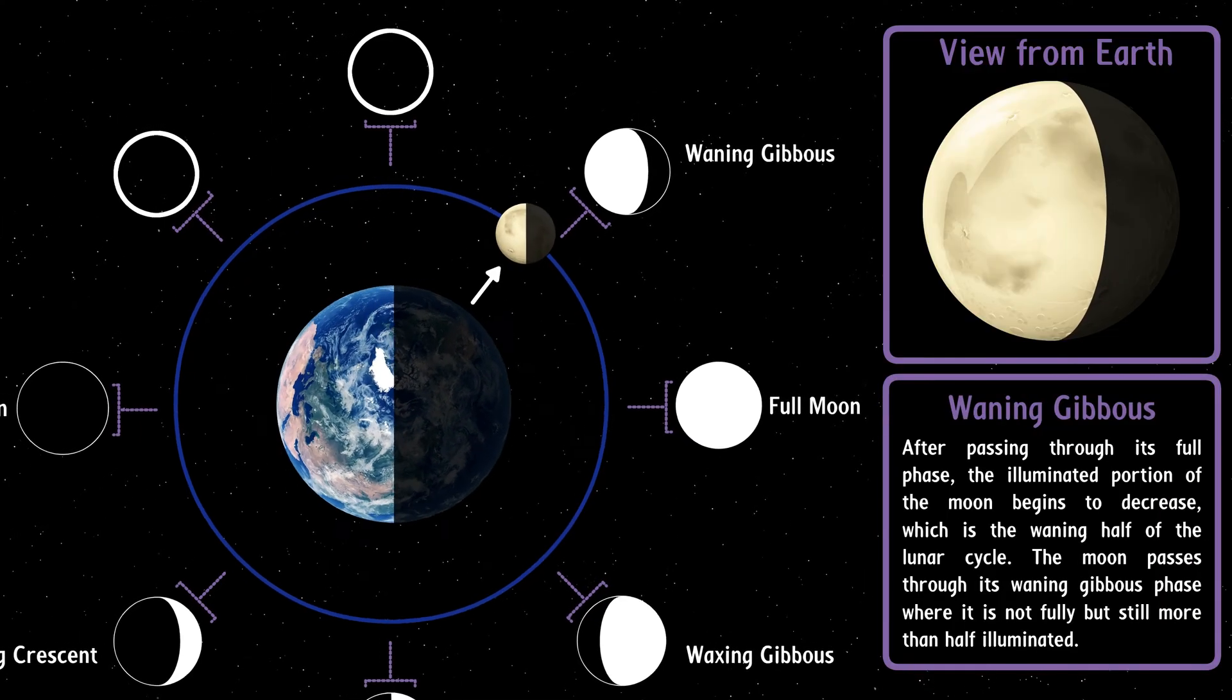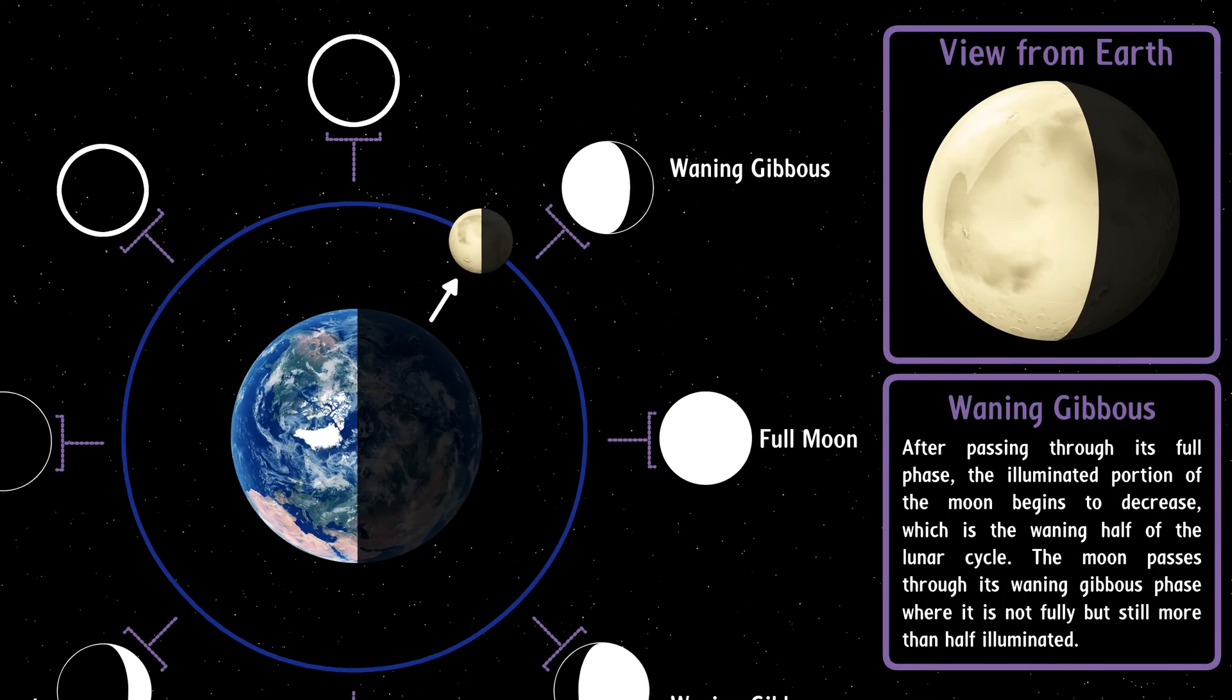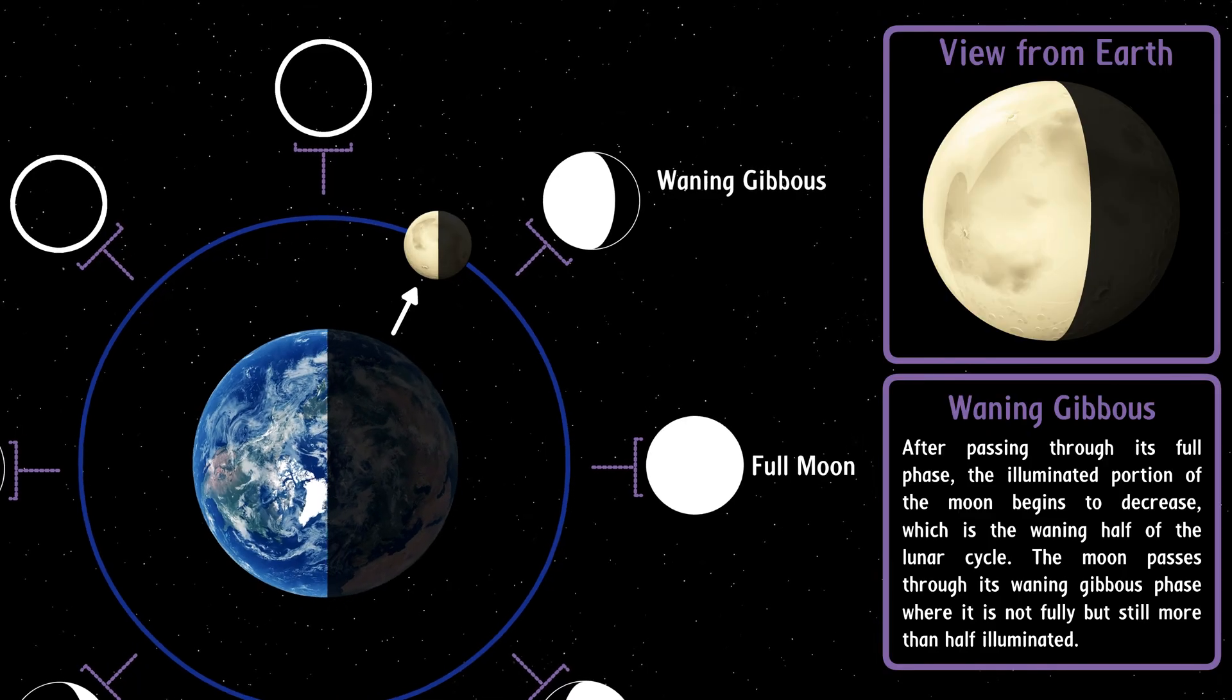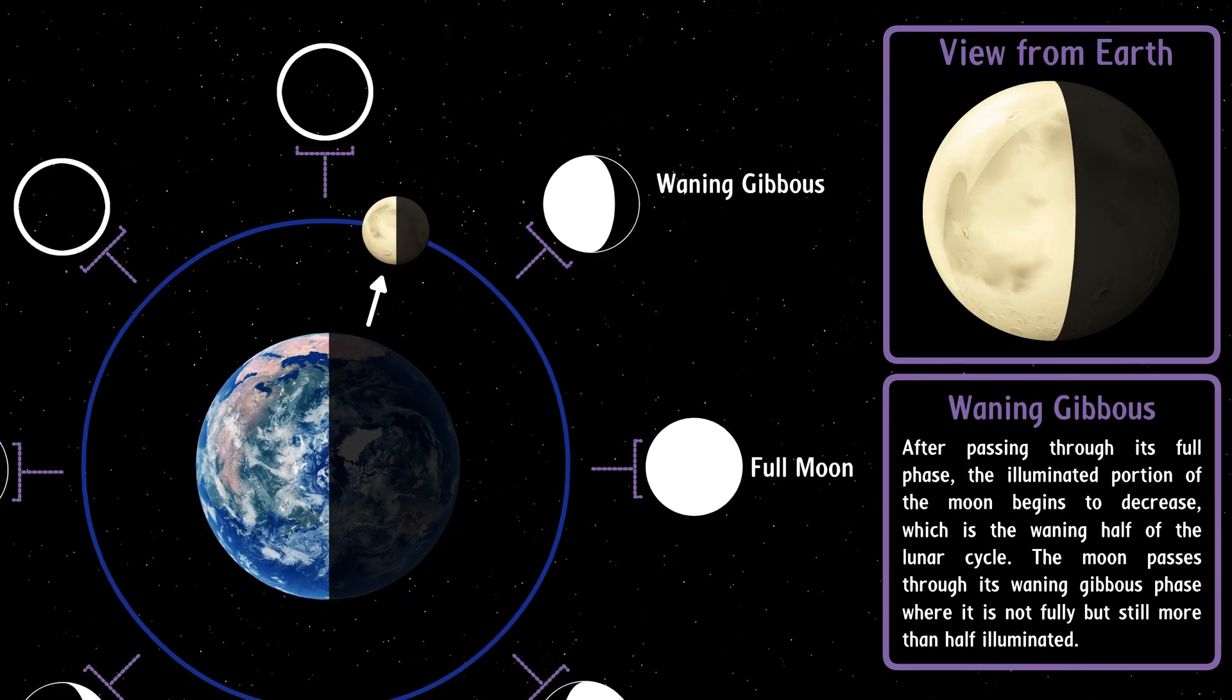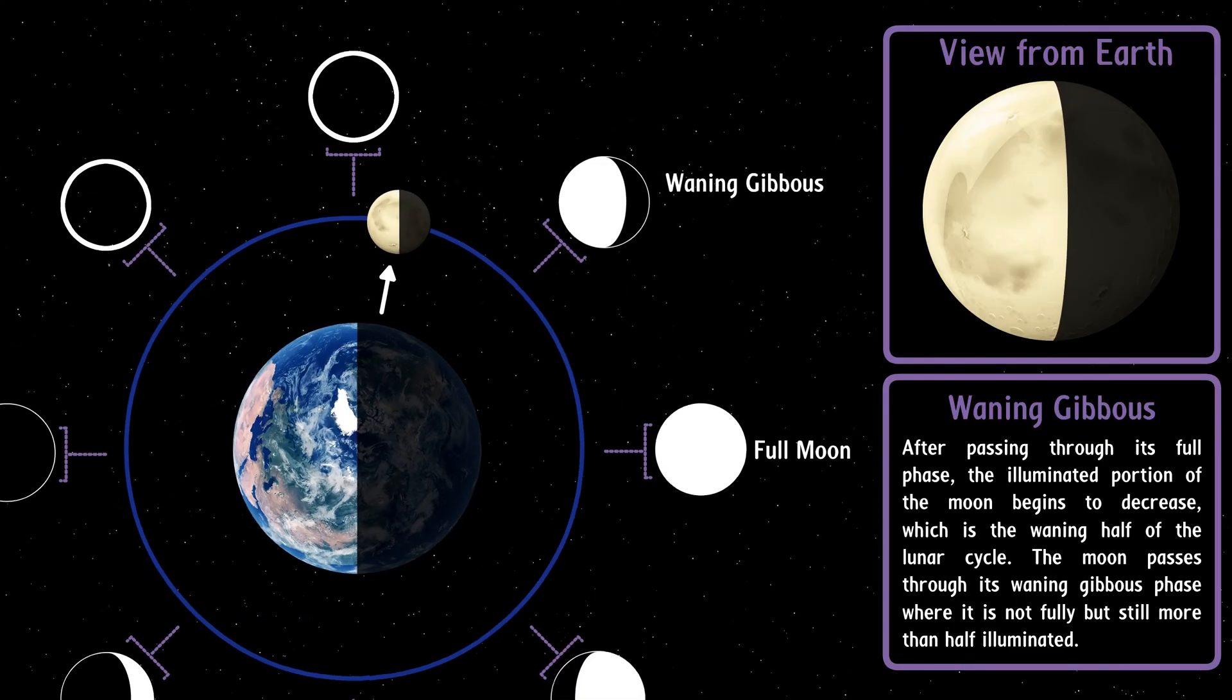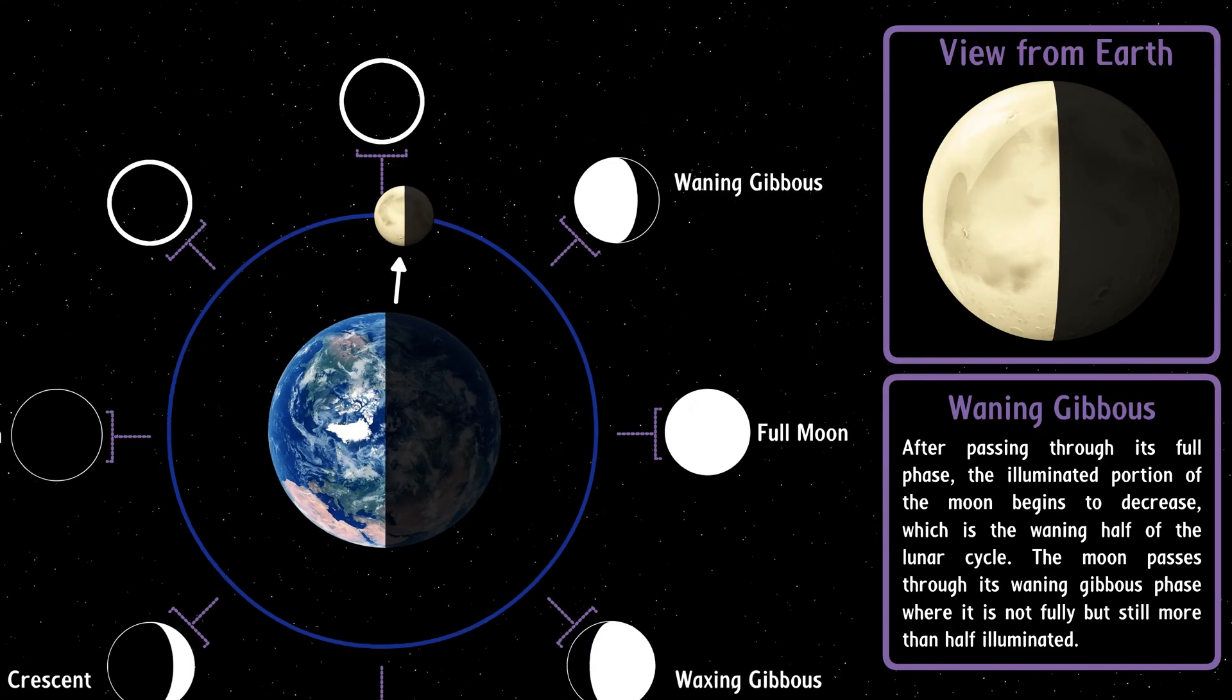Waning gibbous. After passing through its full phase, the illuminated portion of the moon begins to decrease, which is the waning half of the lunar cycle. The moon passes through its waning gibbous phase where it is not fully but still more than half illuminated.